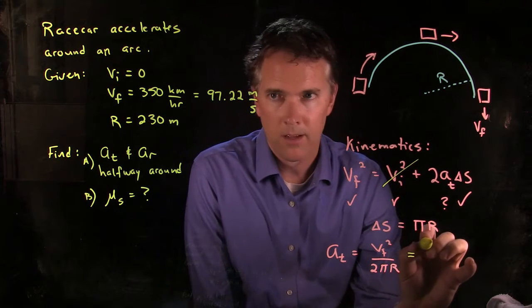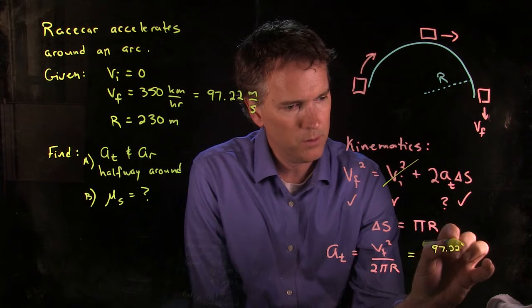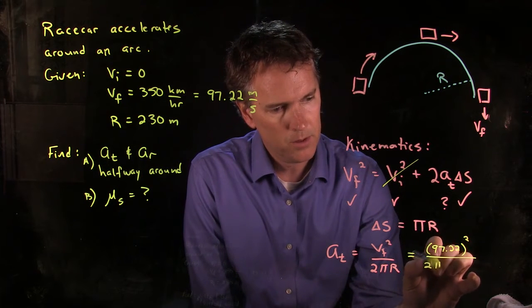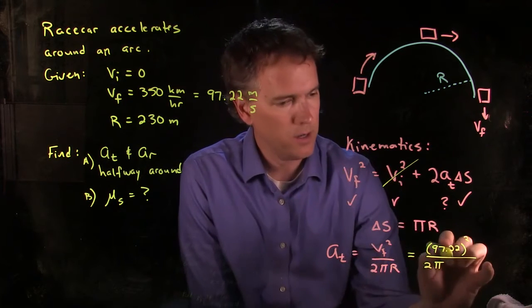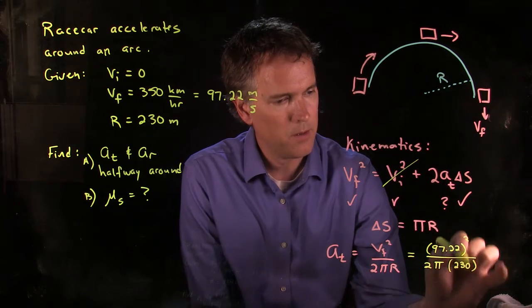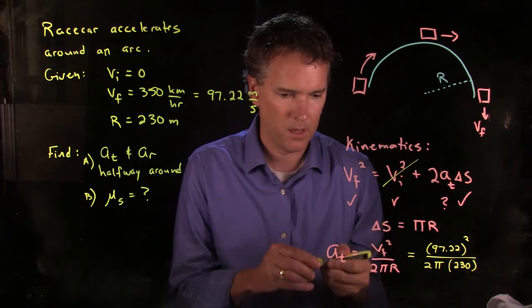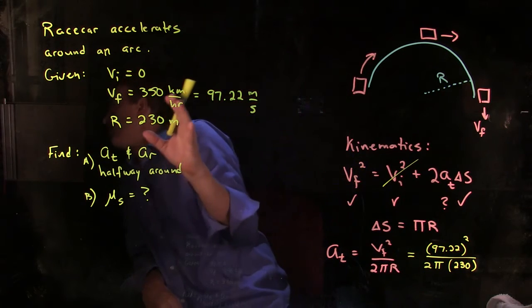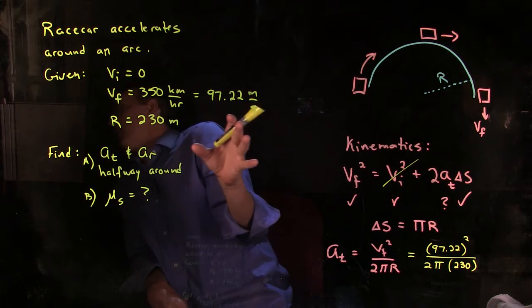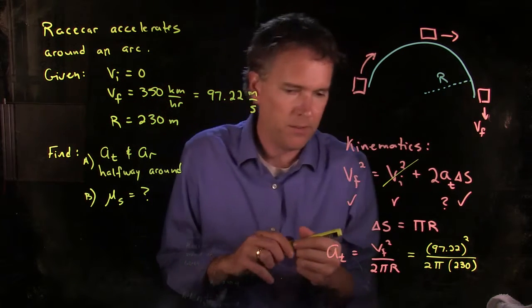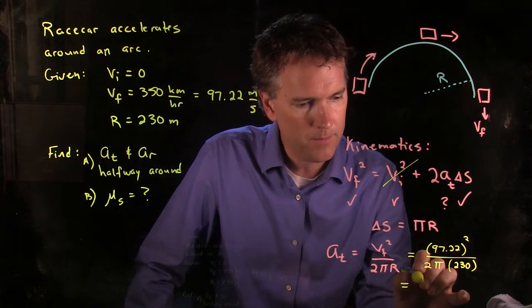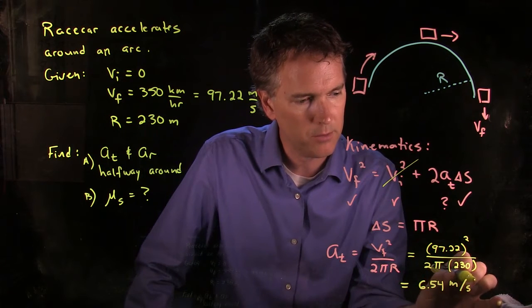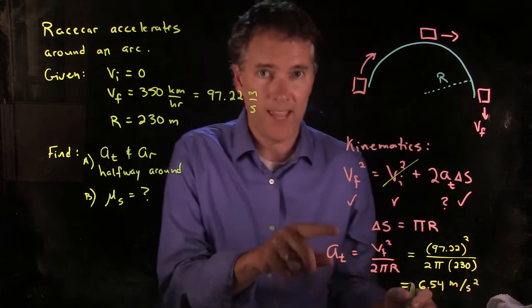So now if we plug in all these numbers, let's see what we get. We've got 97.22 quantity squared, we're going to divide by 2, by π, and then R is 230 meters. Punch those numbers in your calculator and tell me what you get. Make sure you got what I got, which was, I'm looking at my whiteboard over there, 6.54 meters per second squared. That was at.